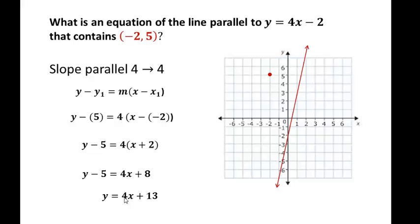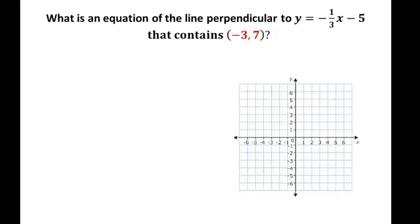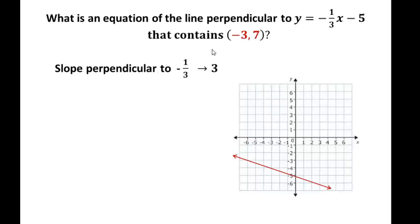Now we're going to find an equation of the line perpendicular to the given line that contains the point negative three, seven. The given line has a y-intercept of negative five and a slope of negative one over three. Graphing it: go up one, backwards three. For a perpendicular line, the opposite reciprocal of negative one over three is just three, so our new line has a slope of three.